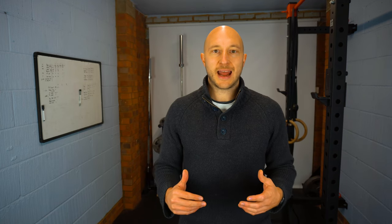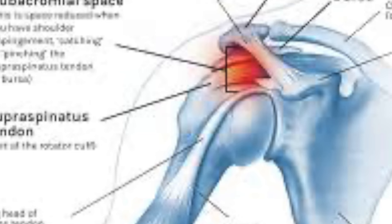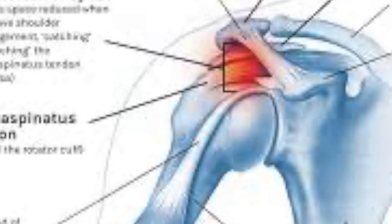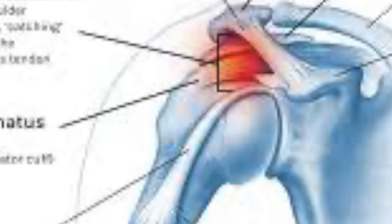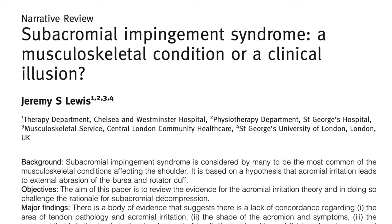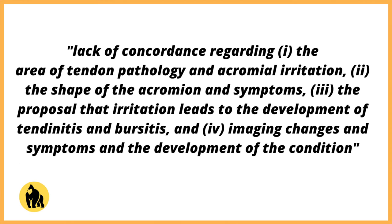From a pathophysiology and etiology point of view, subacromial impingement syndrome is basically thought to involve external abrasion of the rotator cuff and bursa caused by the acromial surfaces. However, looking at the research — particularly a paper by Jeremy Lewis — there's actually a lack of concordance regarding the area of tendon pathology and acromial irritation.